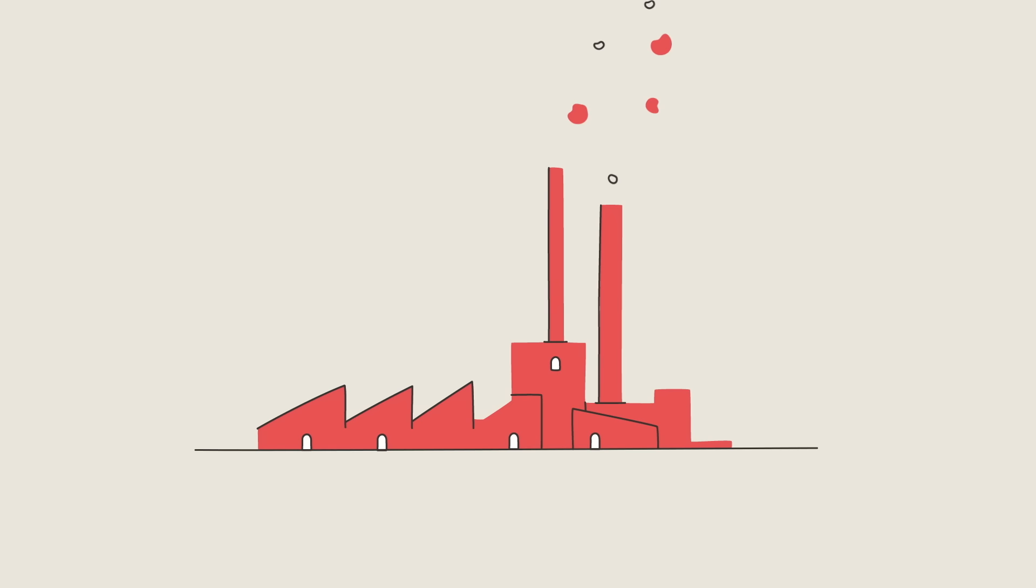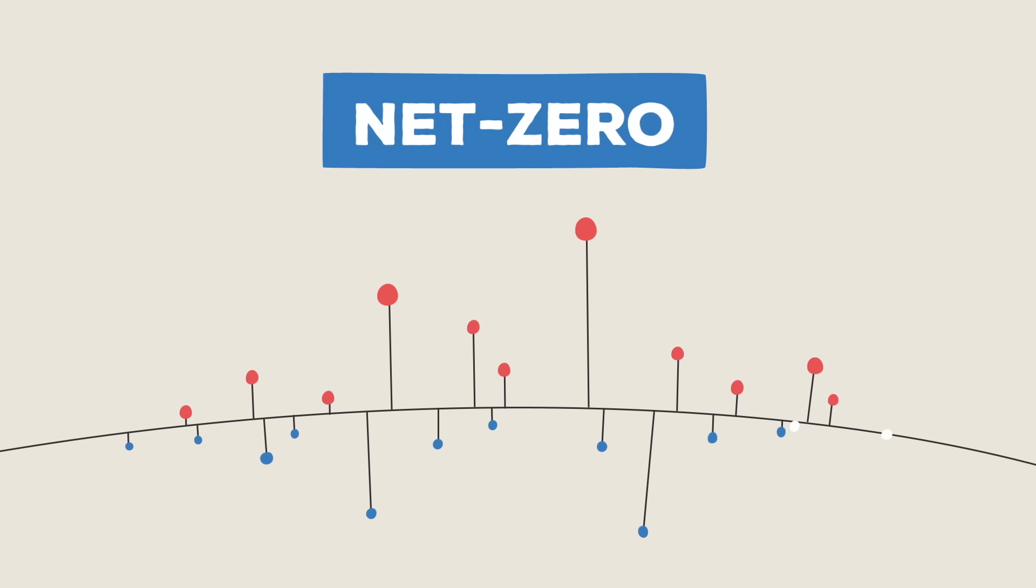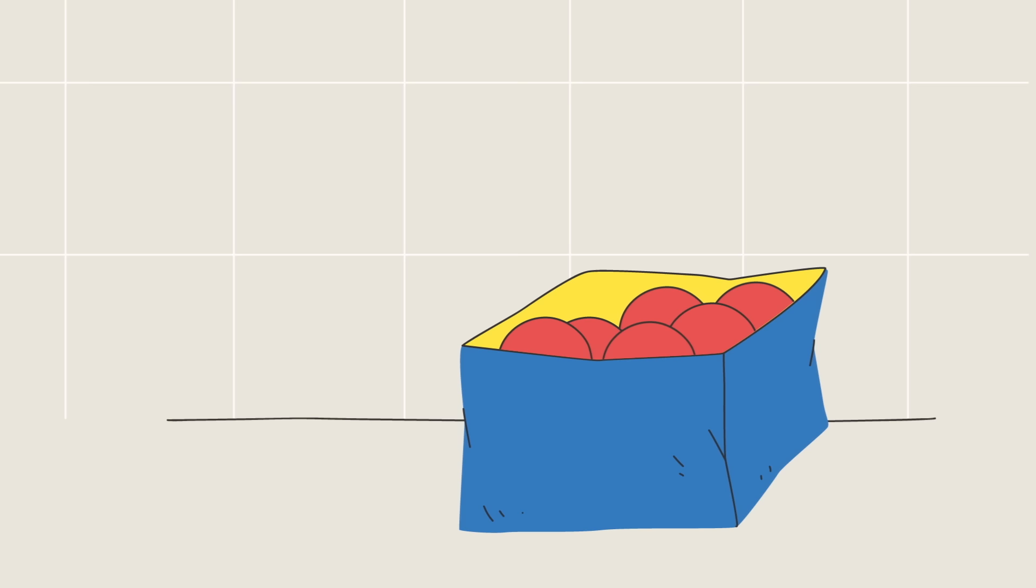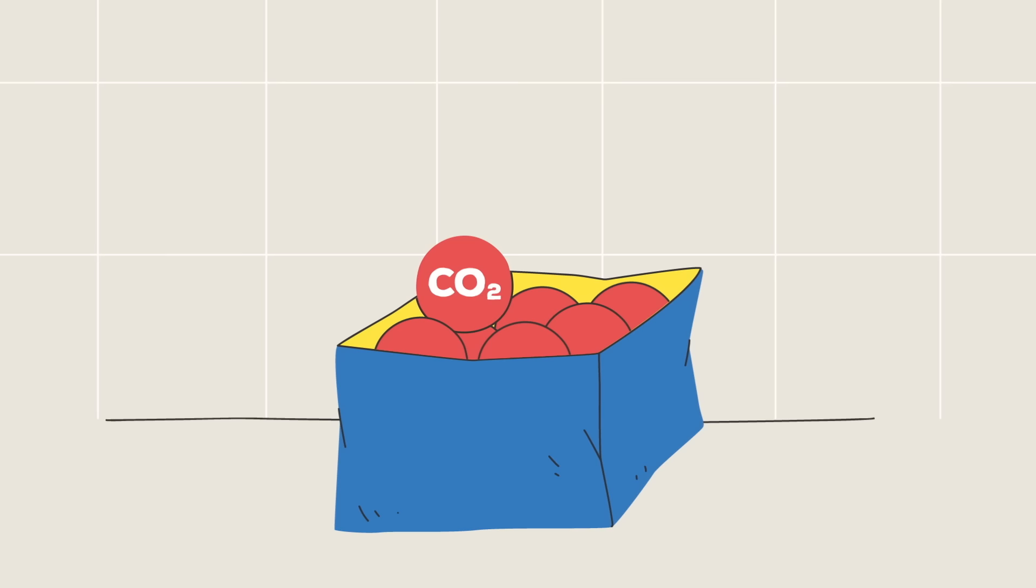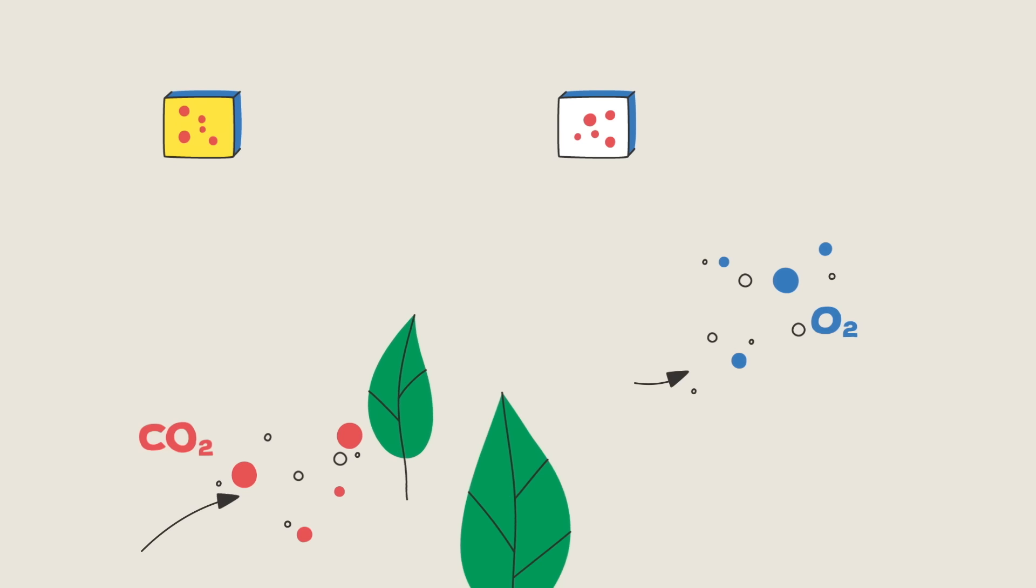To keep from crossing that threshold, we need to get our greenhouse gas emissions down to zero as fast as possible. Or rather, we have to get emissions down to what's called net zero, meaning we may still be putting some greenhouse gases into the atmosphere, but we take out as much as we put in.